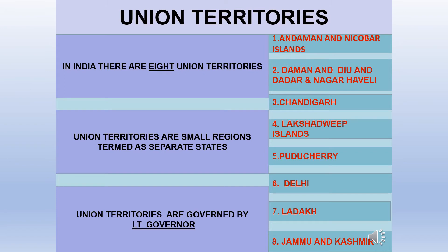Union Territories. In India, there are 8 union territories. These are small regions termed as separate states and they are governed by a Lieutenant Governor. Their names are: Andaman and Nicobar Islands, Daman and Diu and Dadra and Nagar Haveli, Chandigarh, Lakshadweep Islands, Puducherry, Delhi, Ladakh, and Jammu and Kashmir. Lakshadweep is the smallest union territory.